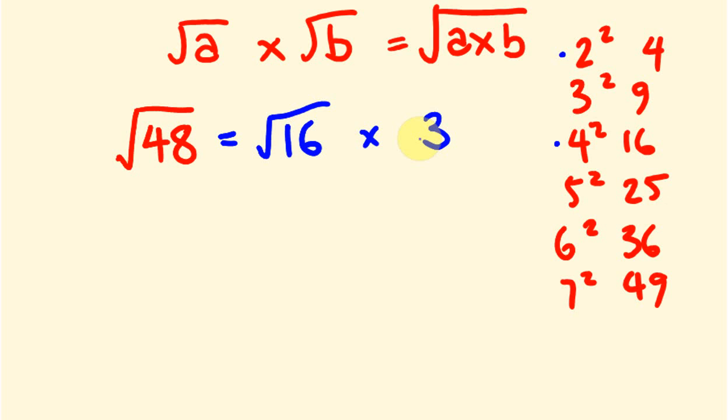Let's work this out. The square root of 16 is 4, and we're going to put that times the square root of 3. And that's our simplified answer.